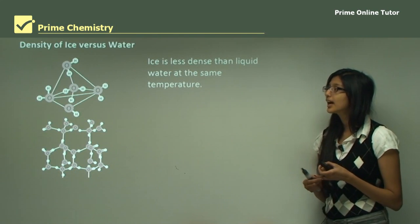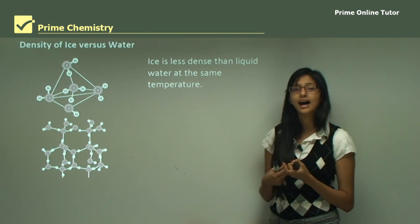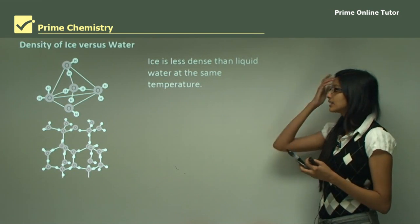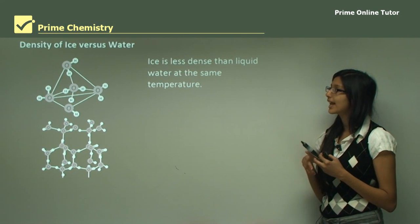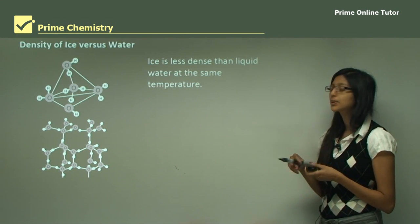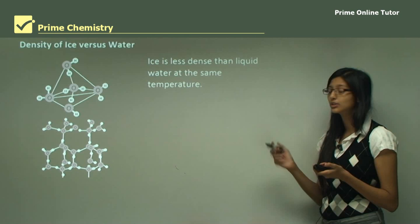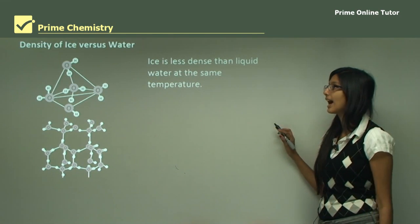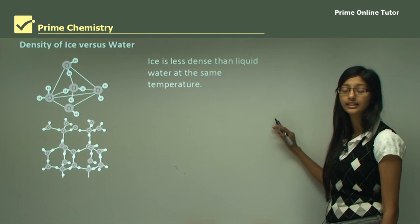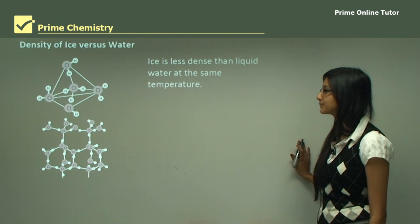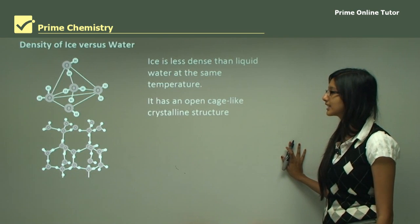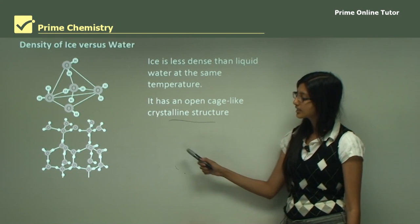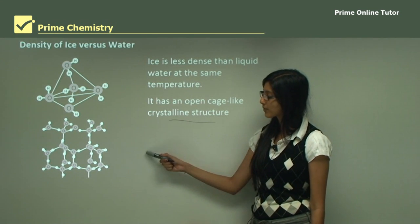Now let's look at why the density of ice is so small compared to water. Ice is less dense than liquid water at the same temperature — at zero degrees Celsius, liquid water still has a higher density than solid ice. As you can see in the diagram, ice has a very crystalline structure, organized in the form of crystals, and there are no water molecules filling the spaces beneath the crystals.